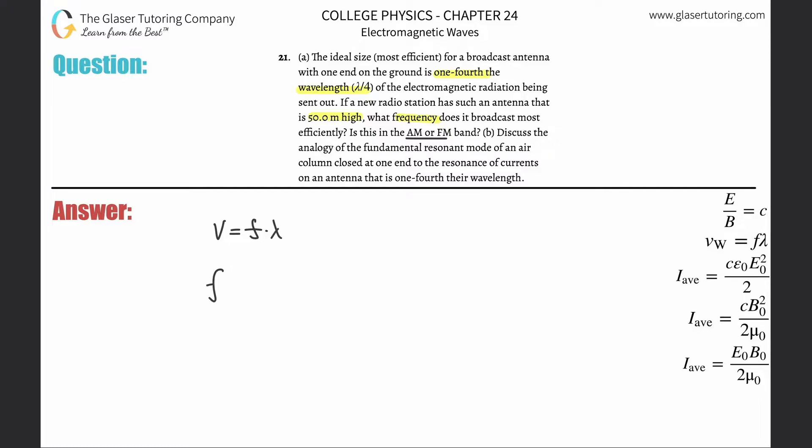So to find the frequency here, we would divide the wavelength from both sides. Now what's the velocity, excuse me, or the speed of the electromagnetic wave? Well, it turns out that it is the speed of light, period.